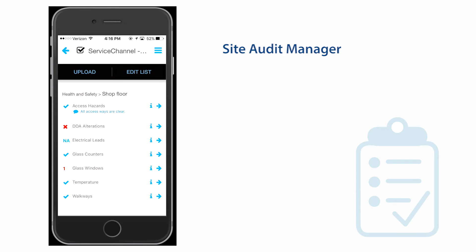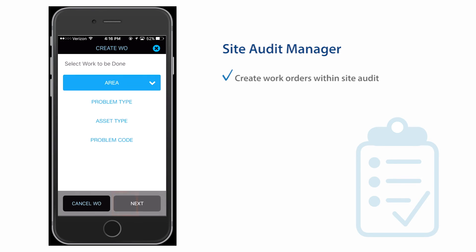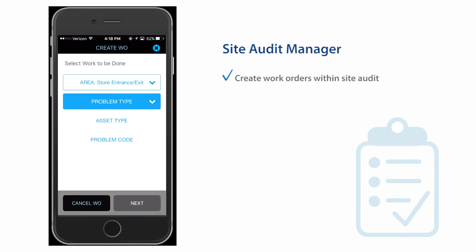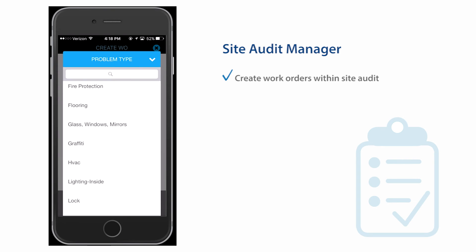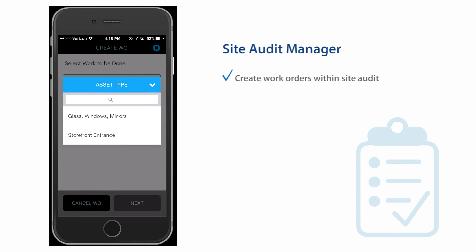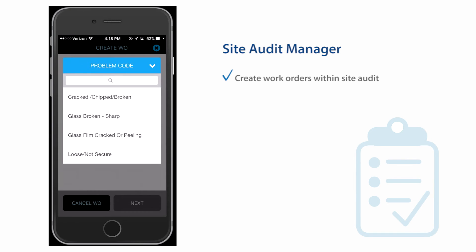For items that need attention, create a work order to dispatch a technician. Simply click Add Work Order, select an area, and choose the problem type. Specify the asset type and the specific problem code.